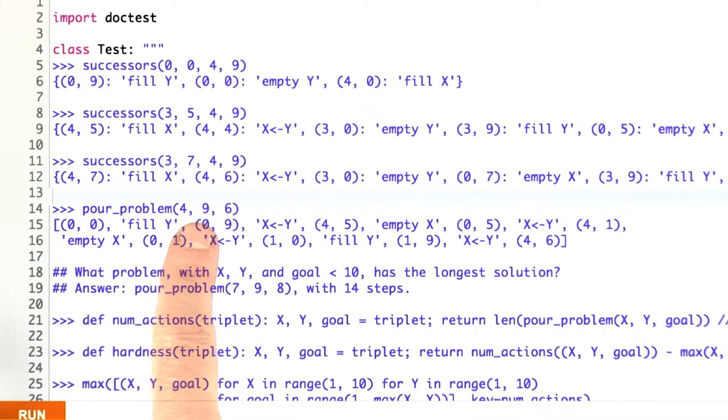Let's go back and look at this solution. I'm asking, given glasses of levels 4 and 9, trying to find the goal of 6, and this is the shortest solution possible.